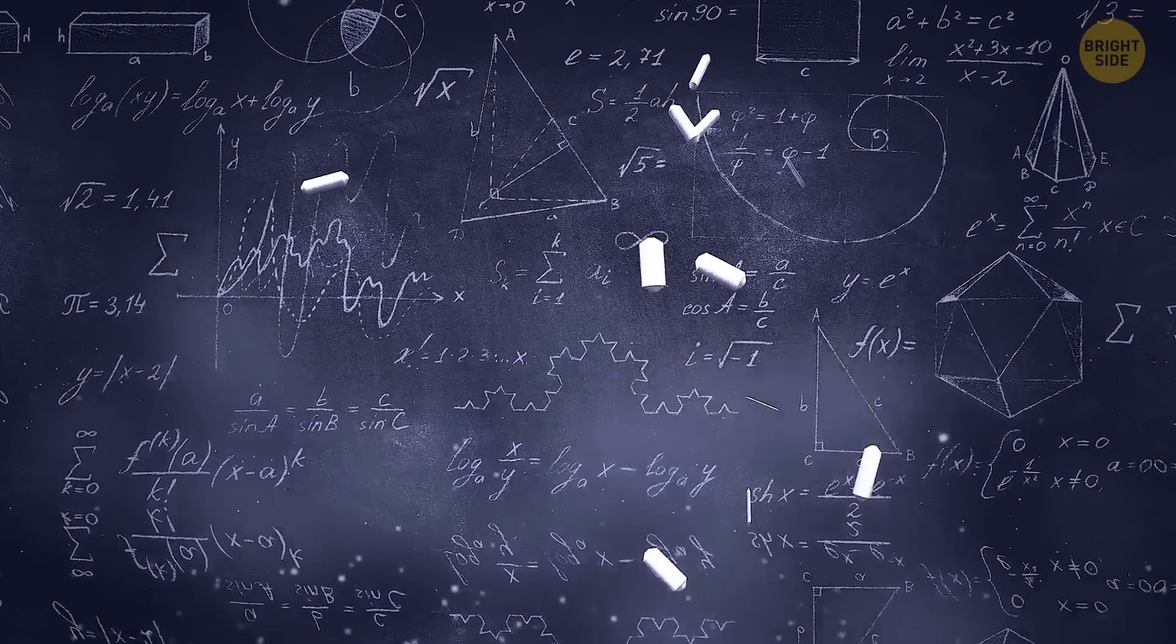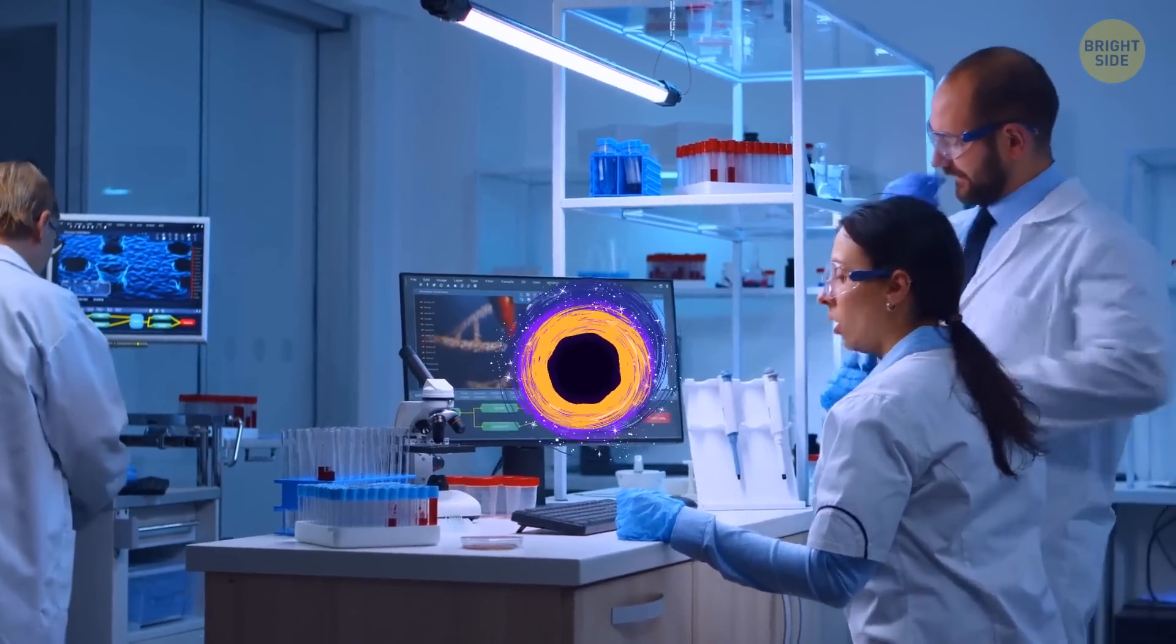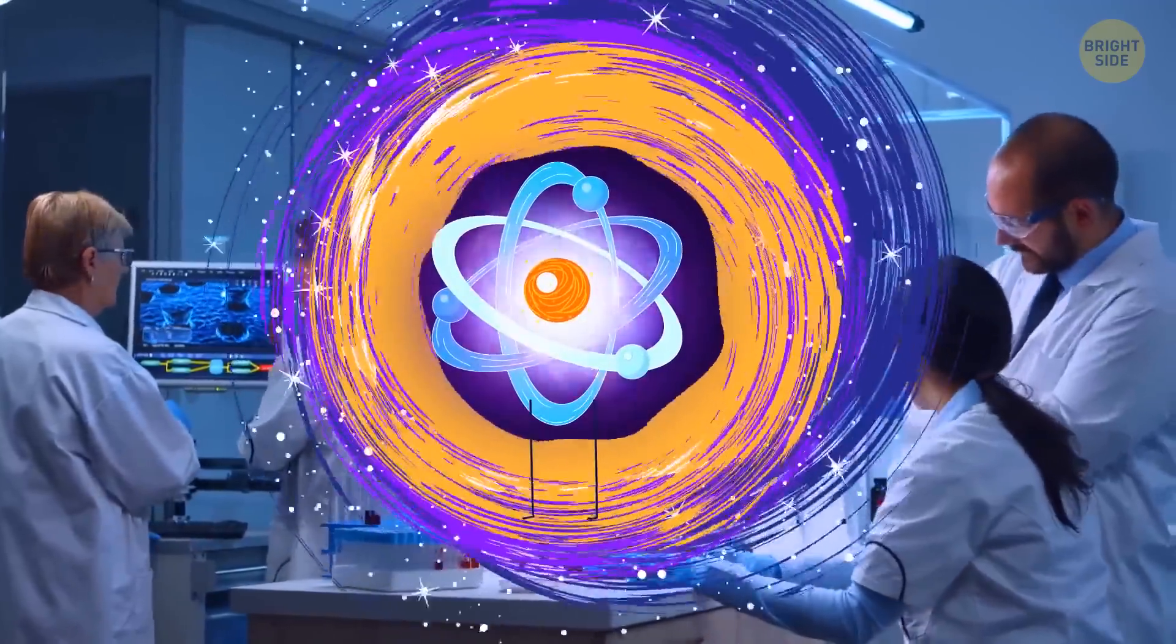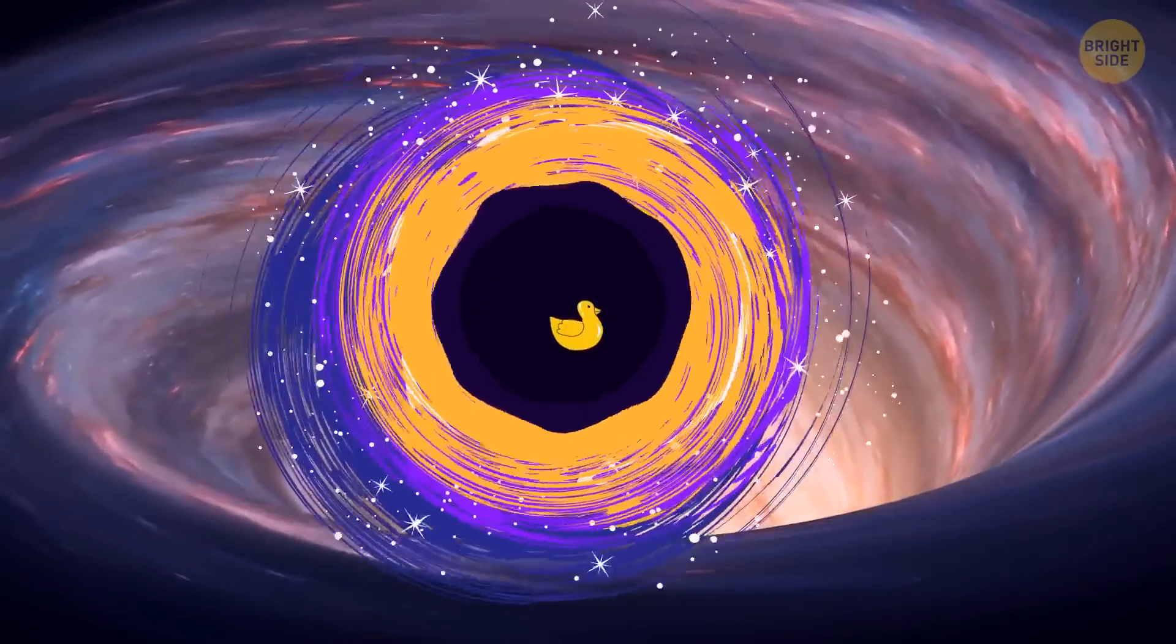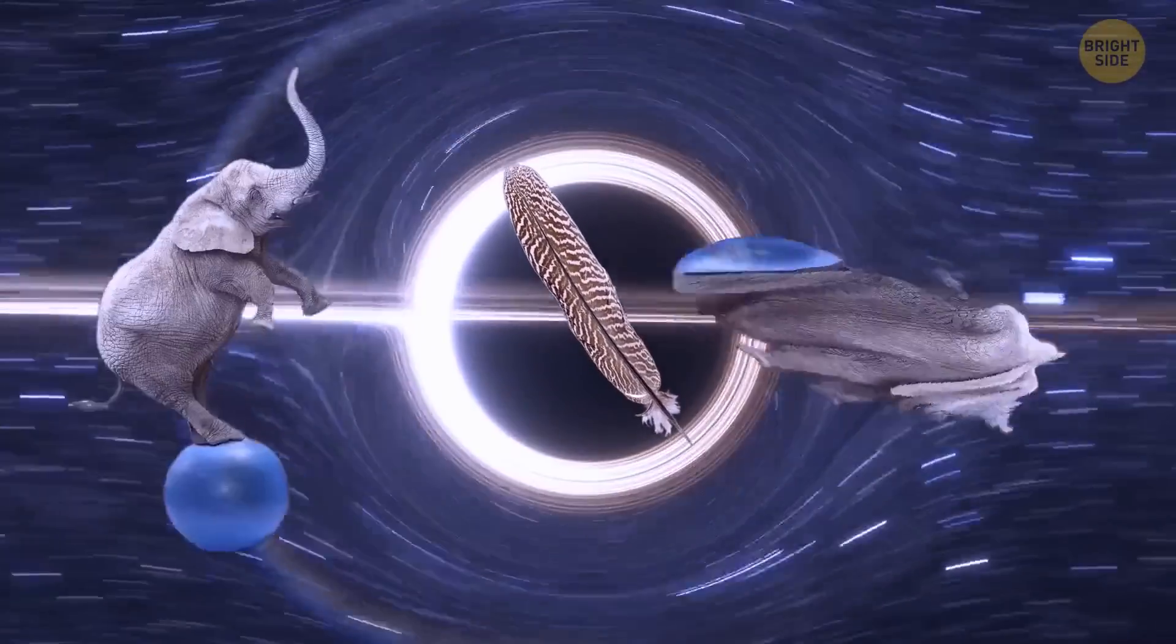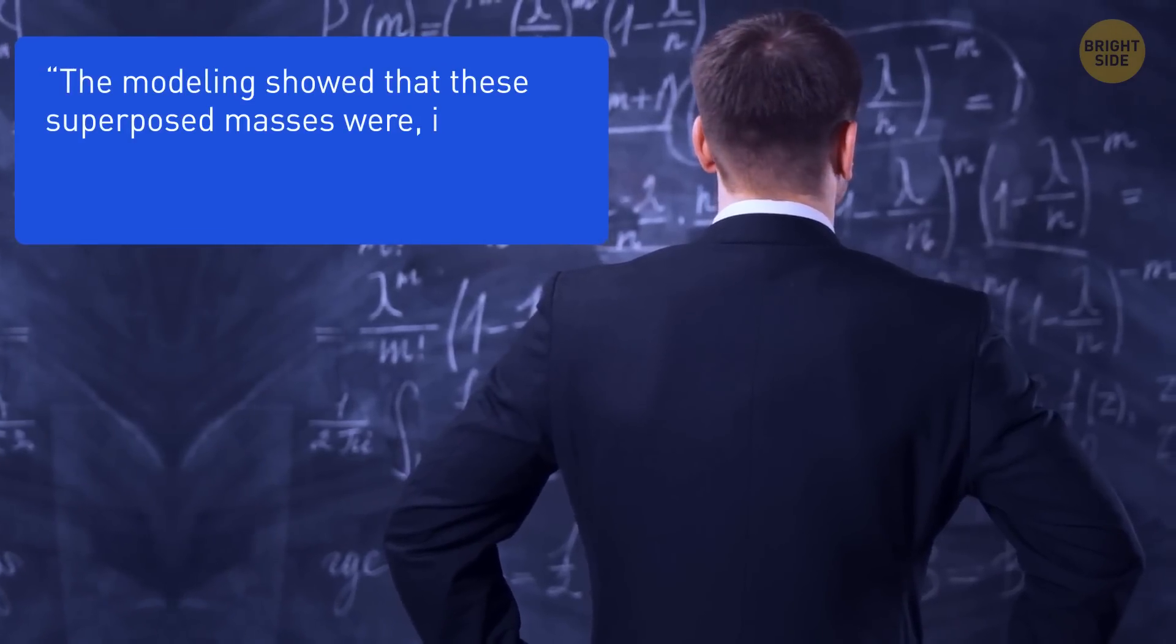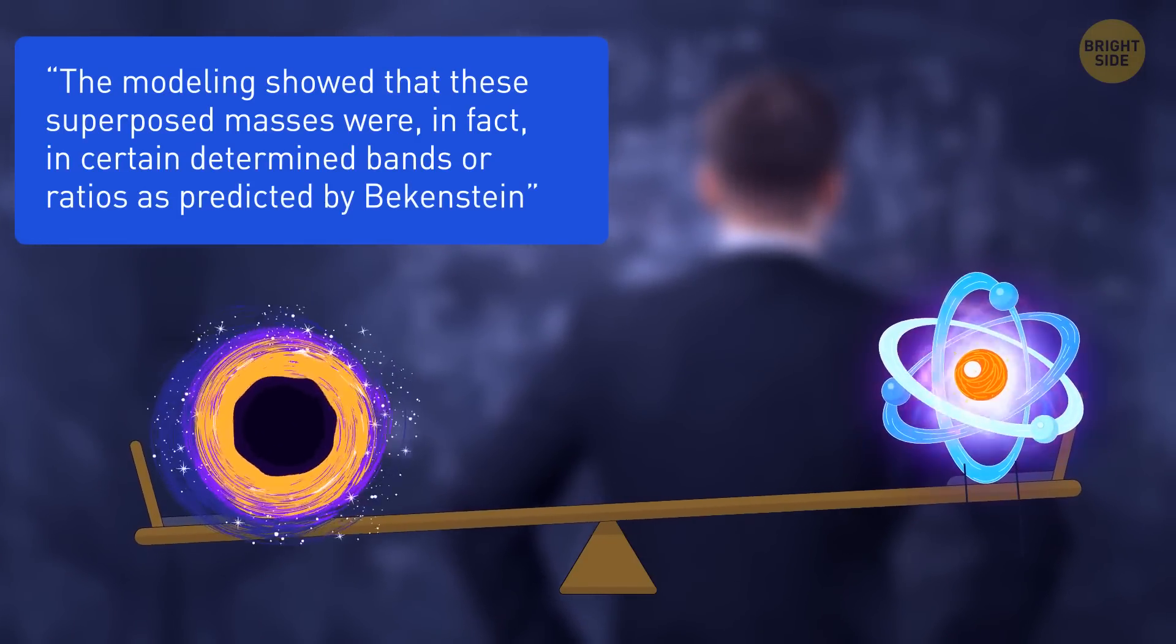The research itself was aimed at finding a connection between quantum particles and black holes. The researchers created a computer structure in which they placed a simulated quantum particle directly outside a giant simulated black hole. And in the end, this analysis showed that, yep, black holes could also exist in several states at once. For example, they can be incredibly massive, and at the same time, have no mass at all. And each of these mysterious space gates can have several masses at the same time. The modeling showed that these superimposed masses were, in fact, in certain determined bands or ratios, as predicted by Bekenstein, said the physicist Magdalena Zych, referring to the study.